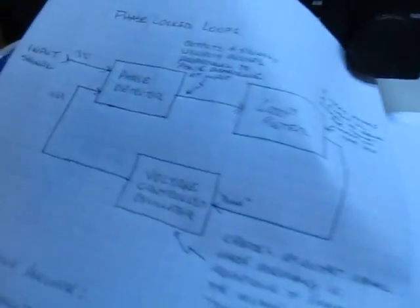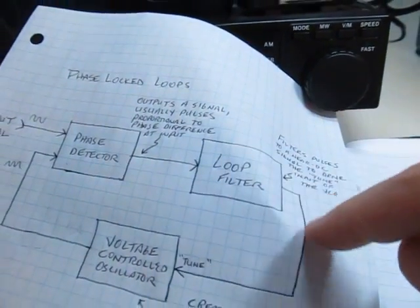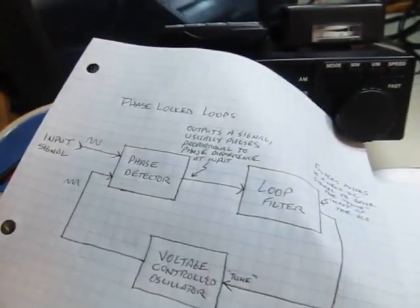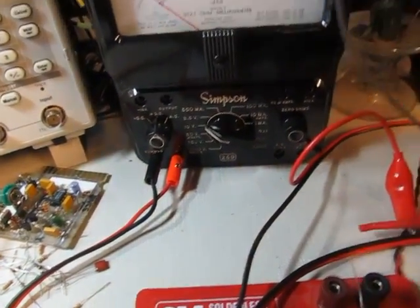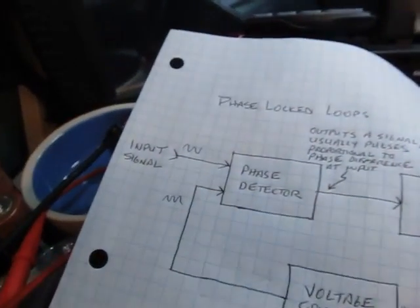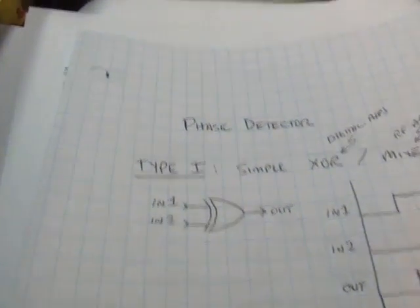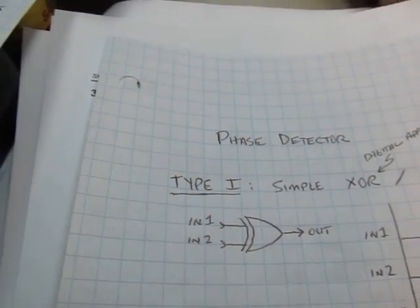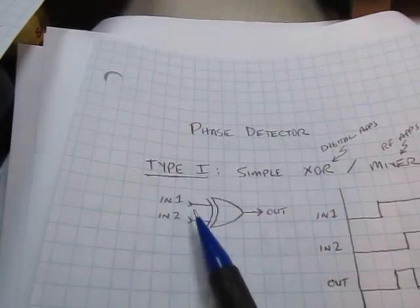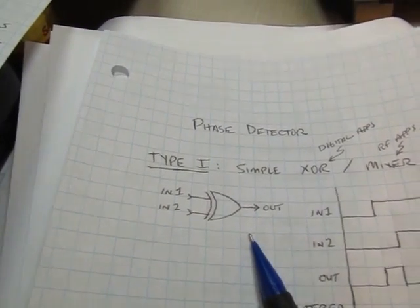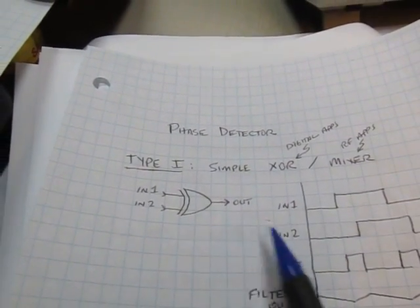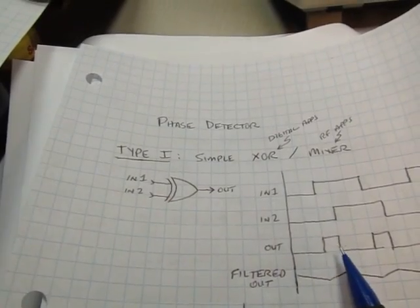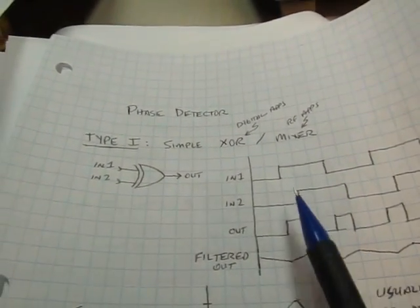So that's the VCO inside the loop — the output of the loop filter is going to drive that input and adjust the frequency and phase into the phase detector. Now let's look at the phase detectors. Phase detectors typically are of two types, literally called type 1 and type 2. Type 1, from a digital standpoint, looks like an XOR gate. For RF-type applications it's typically done with a balanced mixer. This type of phase detector gives you an output whose pulse width or duty cycle is proportional to the phase difference.